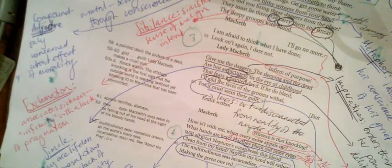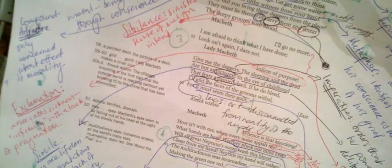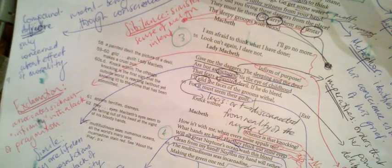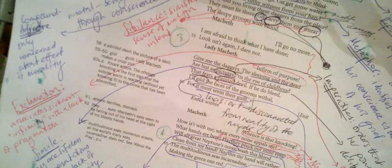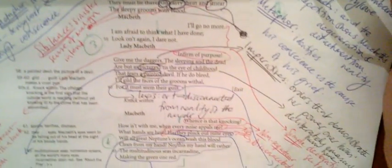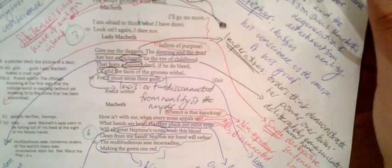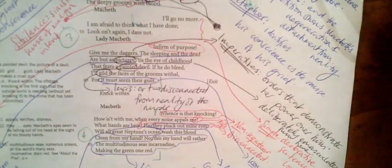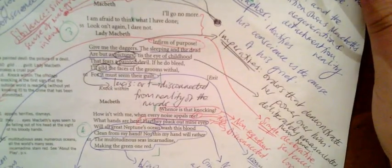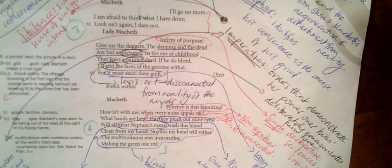Lady Macbeth criticizes him: 'Infirm of purpose!' This exclamation associates sickness with a lack of pragmatism. She says 'Give me the daggers,' again talking in imperatives, taking the situation into her own hands. 'The sleeping and the dead are but as pictures. It is the eye of childhood that fears a painted devil.'